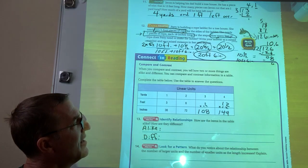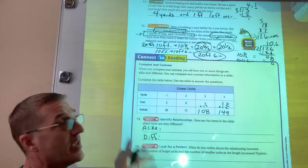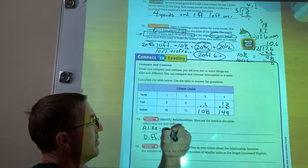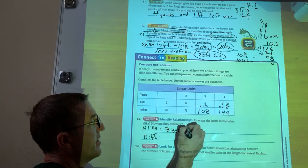So how are they alike? It looks to me like they all get bigger as they go to the right. Bigger to the right.